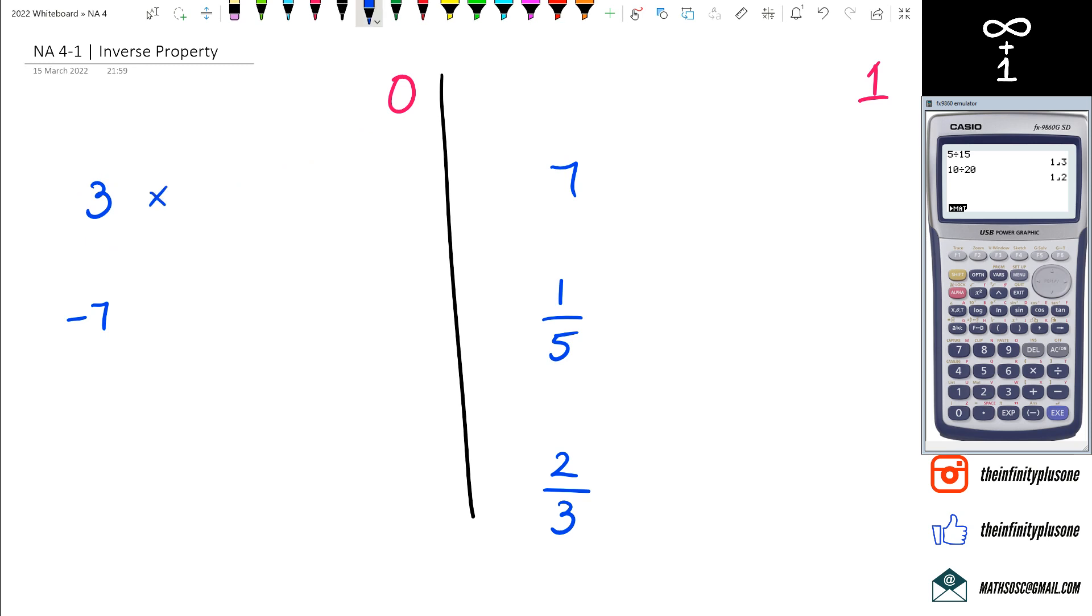A lot of times when people see that, they go okay, so three times zero equals zero, and negative seven times zero equals zero. Well, that's not really using inverse property—you're just multiplying by zero. What can you do to three to actually end up with zero? The inverse property is actually doing the opposite of what it is. So in this case, we've got plus three, which means the opposite of plus three is minus three.